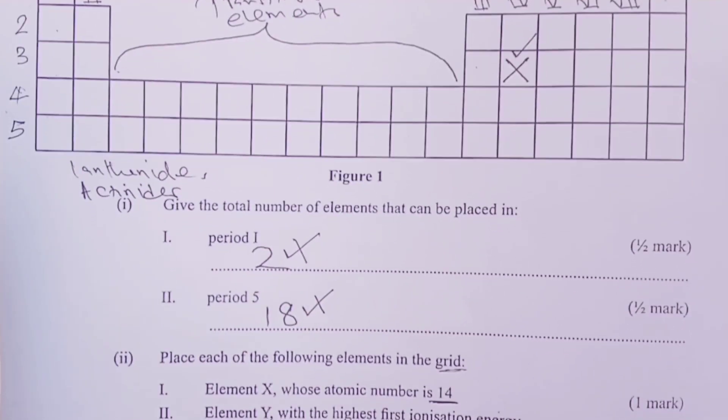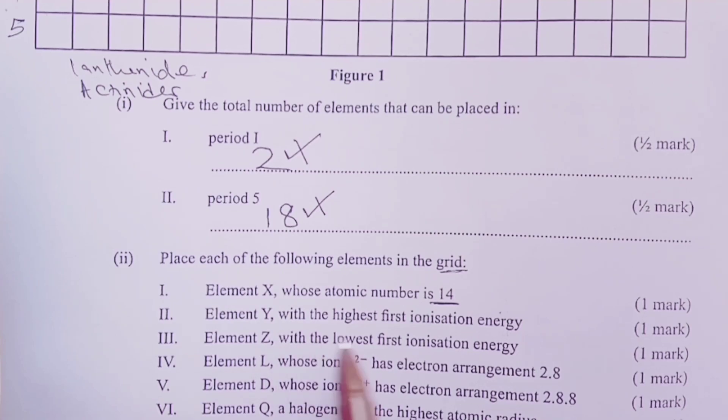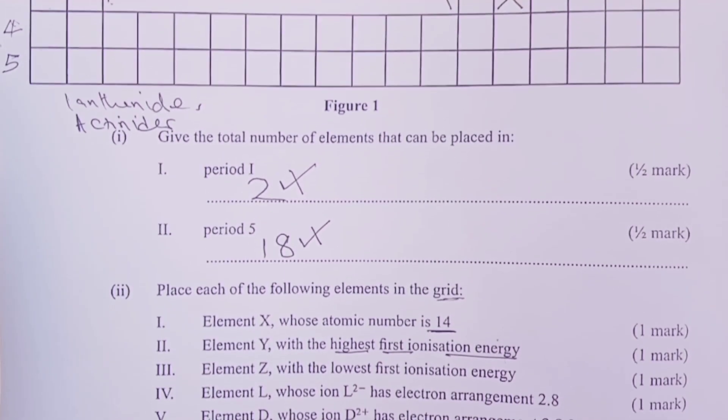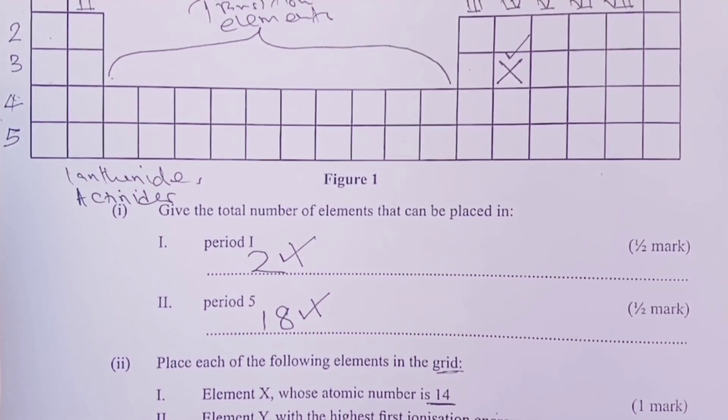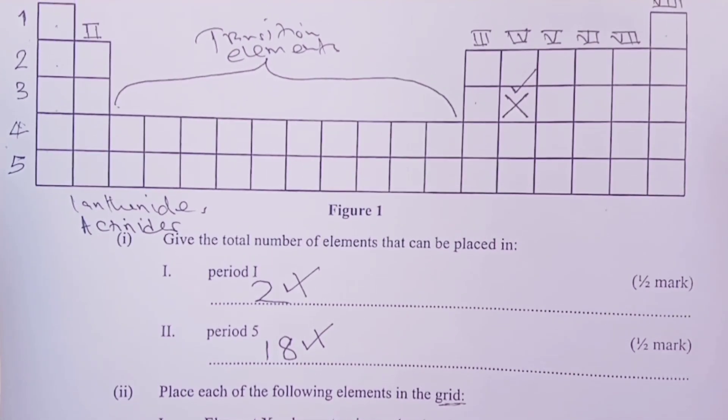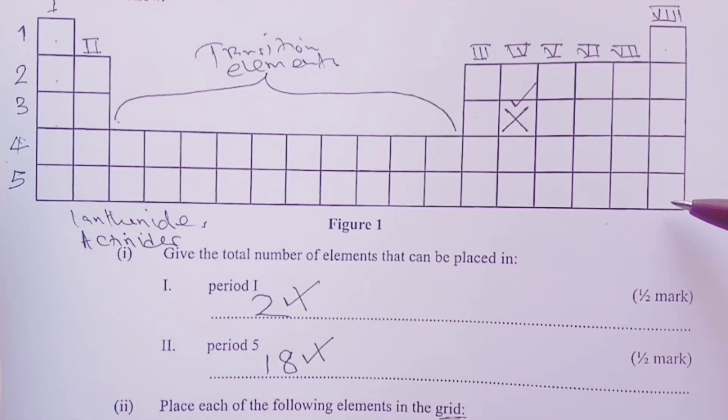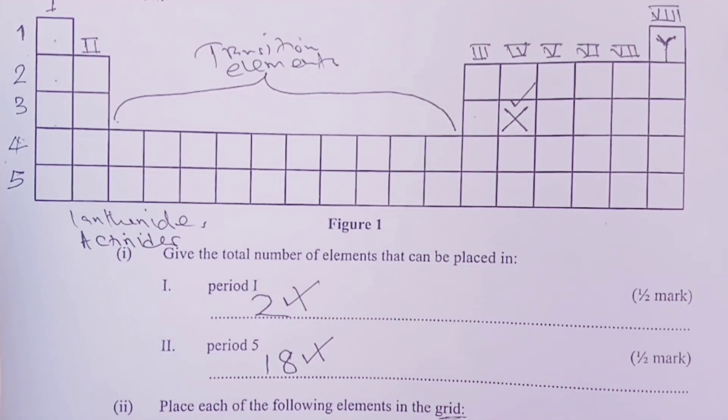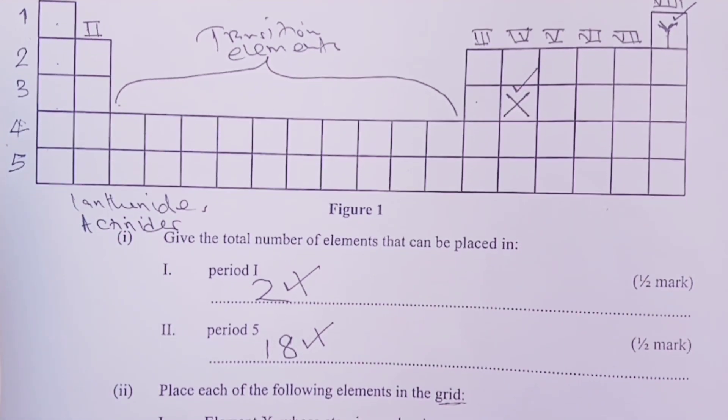Moving on, we are also asked to place element Y, which has the highest first ionization energy. Now generally, it is the noble gases that are known to have very high ionization energy. That is why they usually don't form compounds. So our element Y must be a noble gas. But as you move down, we've always said ionization energy decreases. So obviously, the one with the highest has to be this one here that has the smallest atomic radius. That would be the element with the highest first ionization energy. We would go for a noble gas with the smallest atomic radius. That would give us the next one mark for the grid.